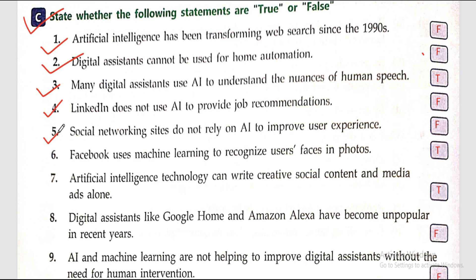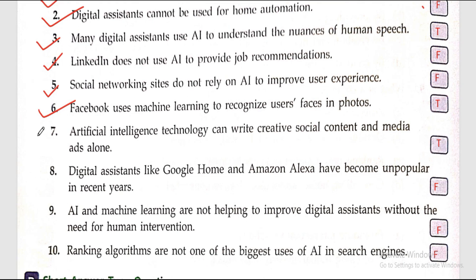Five: social networking sites do not rely on AI to improve user experience. False. Six: Facebook uses machine learning to recognize user faces in photos. True. Seven: artificial intelligence technology can write creative social content and media ads alone. True.